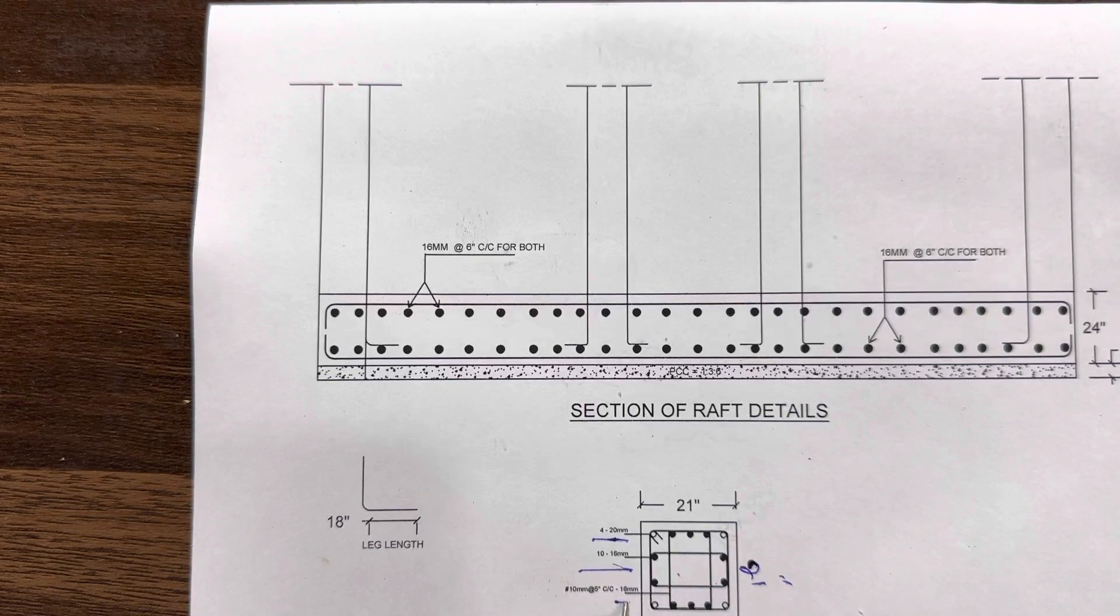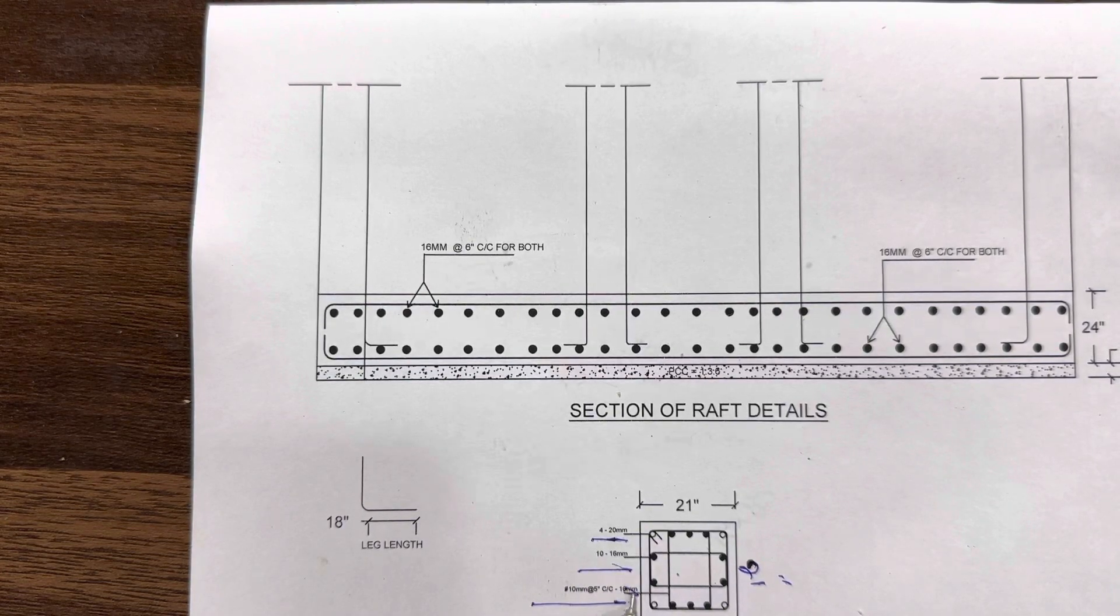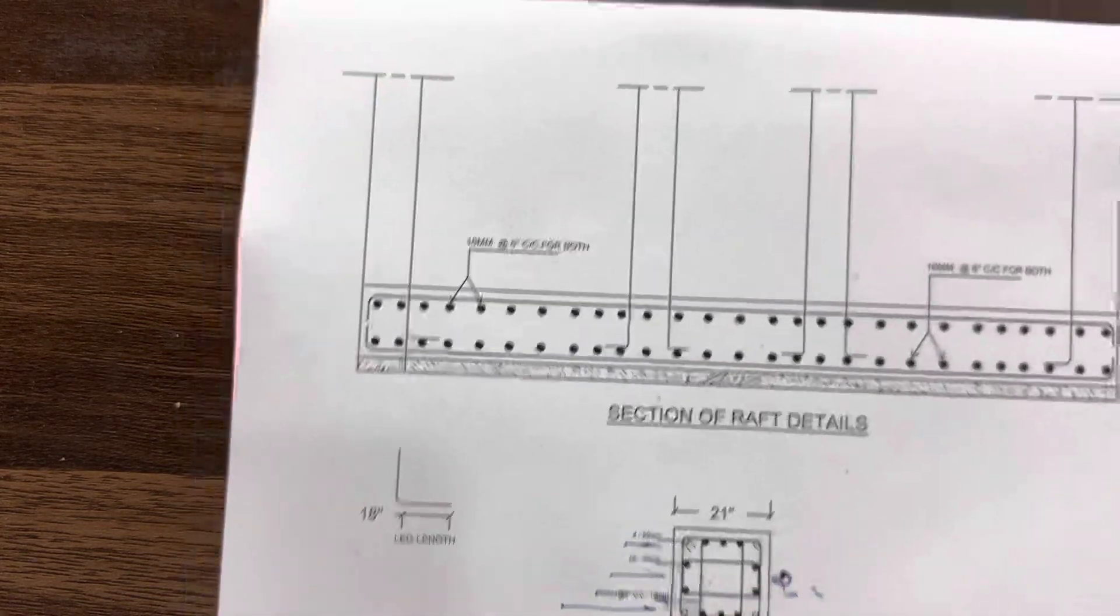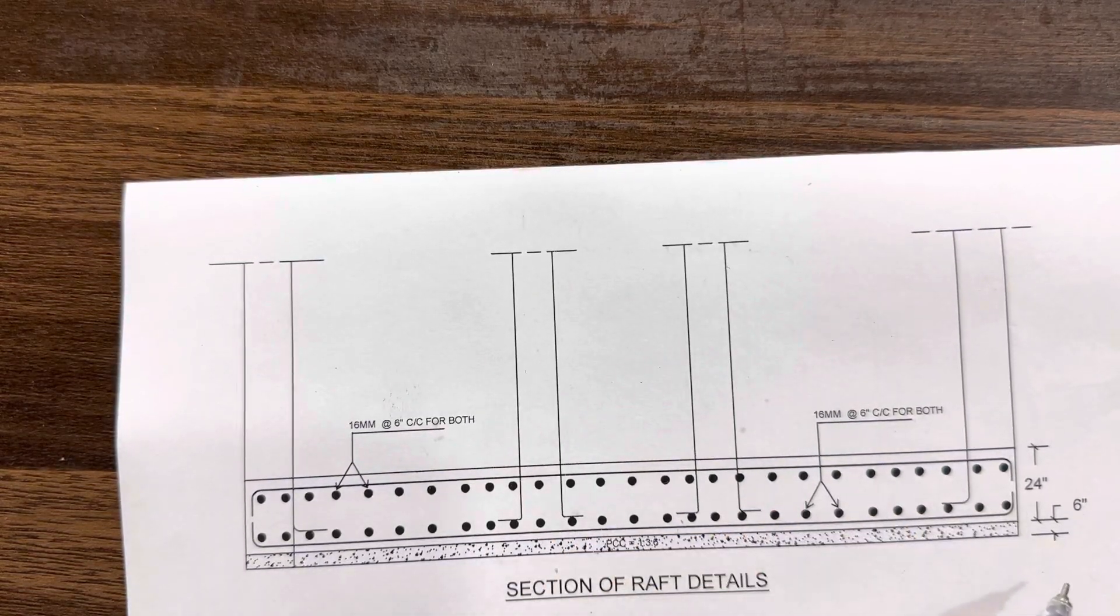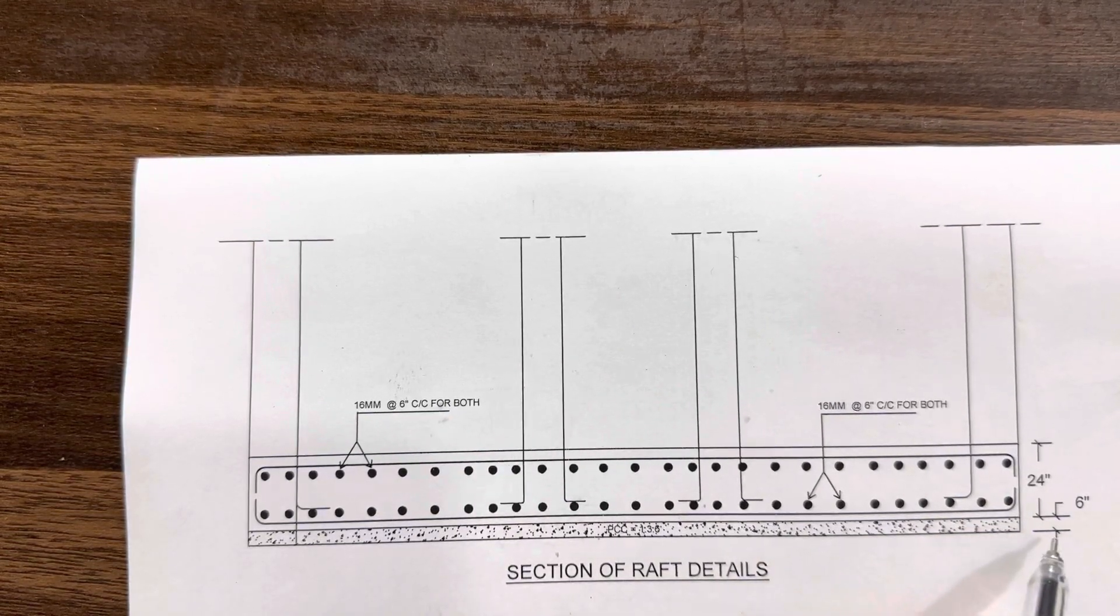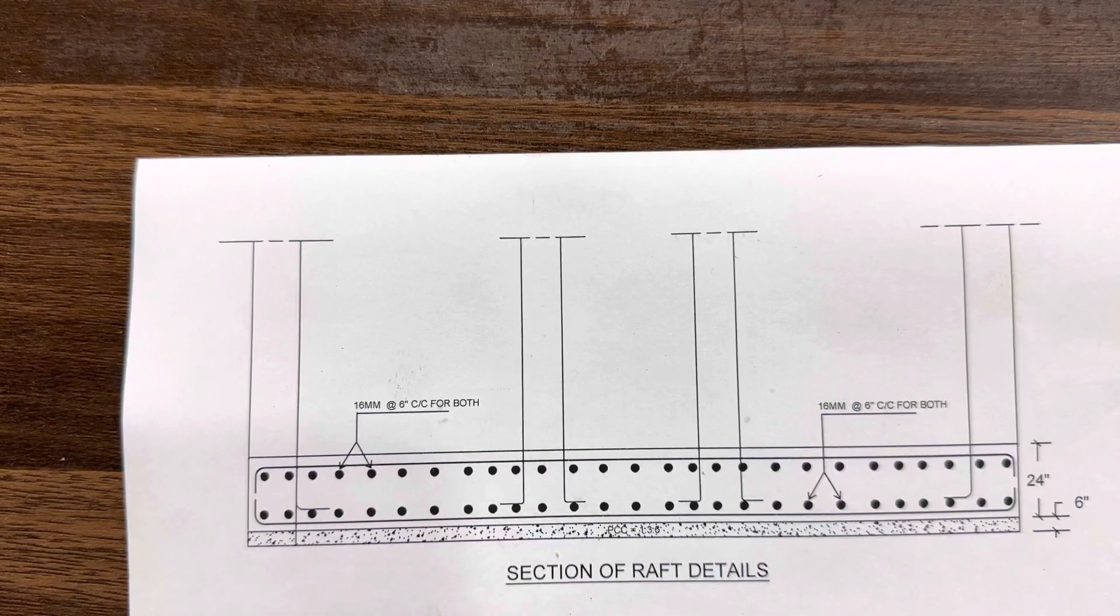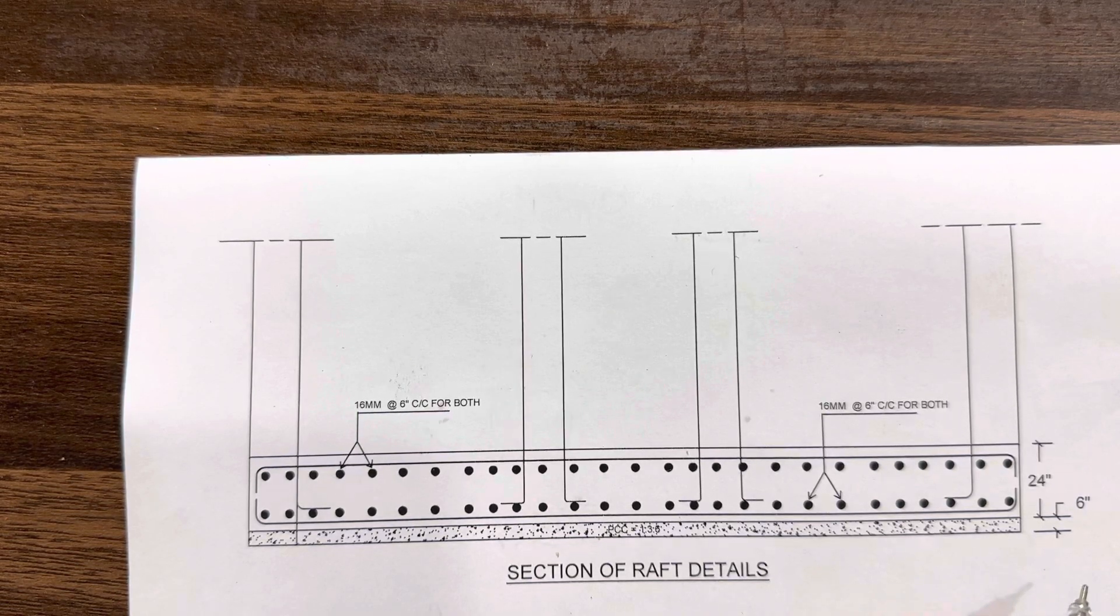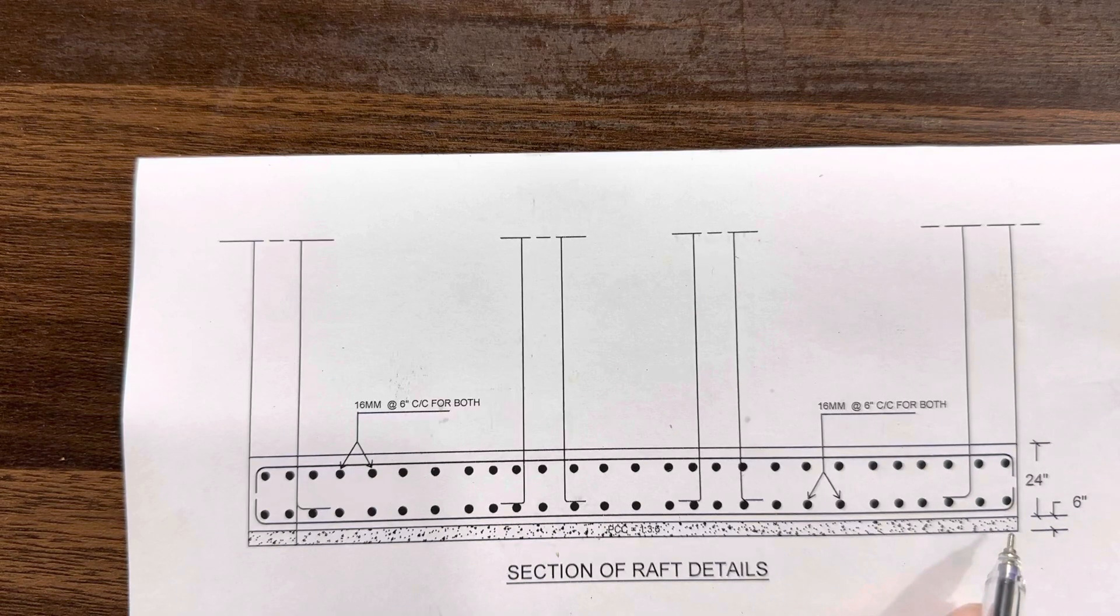These are the details of the column, because this is plan of column. Let me guide you for section of raft. The bed depth is with lean concrete which is 30 inches total. Six inches we have lean concrete with ratio of 1:4:8. Sometimes we are doing three inches, but there it was unlevel, so we did six inches thickness of the lean concrete.